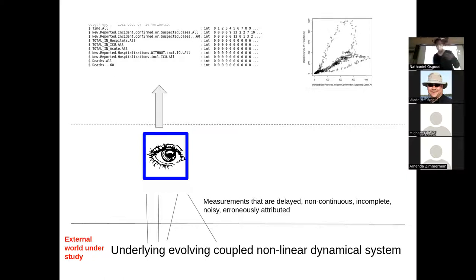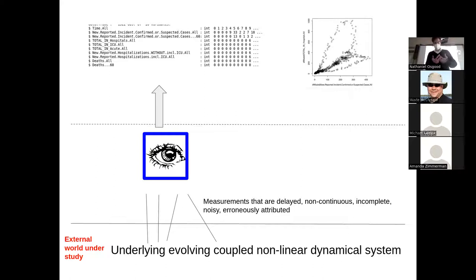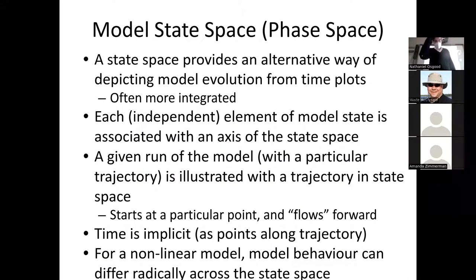Good statisticians are often keenly aware that data doesn't come from heaven — data isn't just handed to us, appearing out of nowhere. It comes from processes that generated it, and it has the fingerprints of and whispers about the structure of those processes. Our models are about those processes and we expect an alignment and some sort of consistency between them.